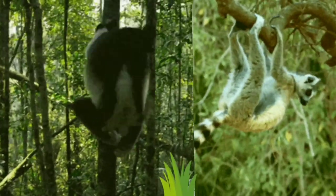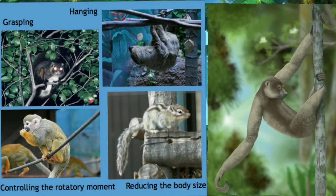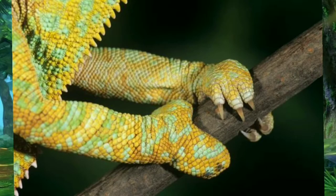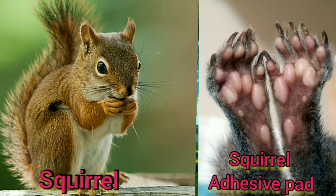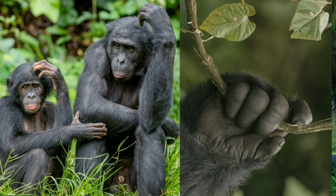Claws, adhesive pads, and flexible ankle joints that can turn forward and backwards are all adaptations useful for staying in place. Arboreal primates have hairless fingertips that allow the animal's hand to squeeze the branch between the fingertips to generate friction.